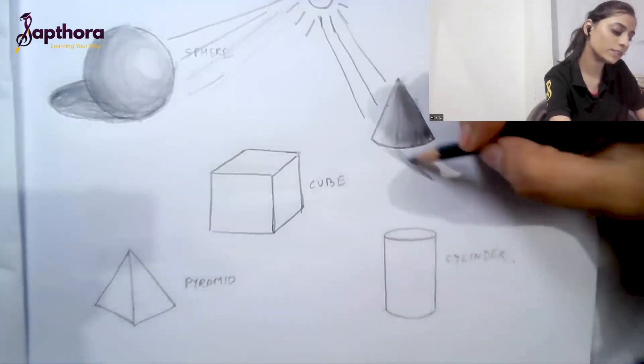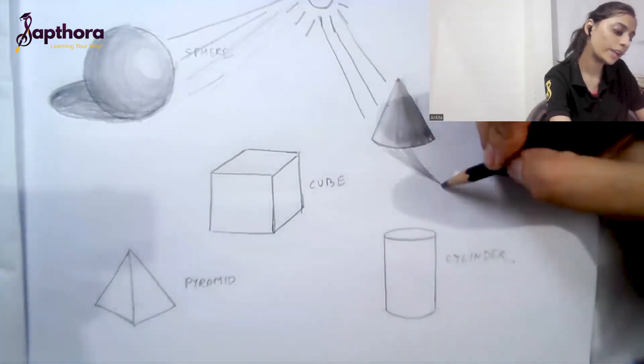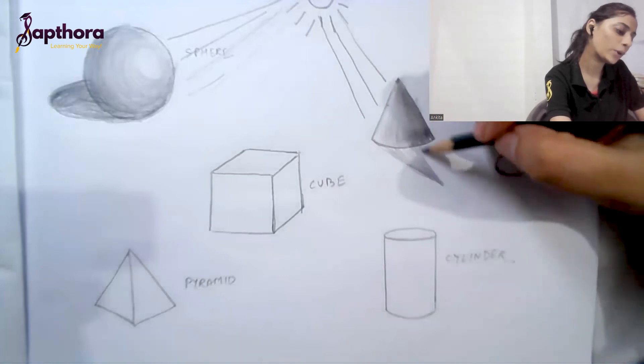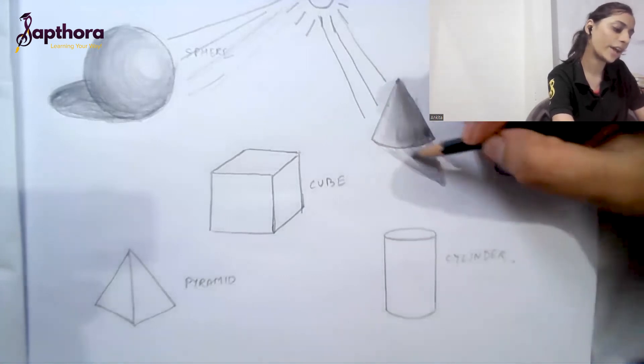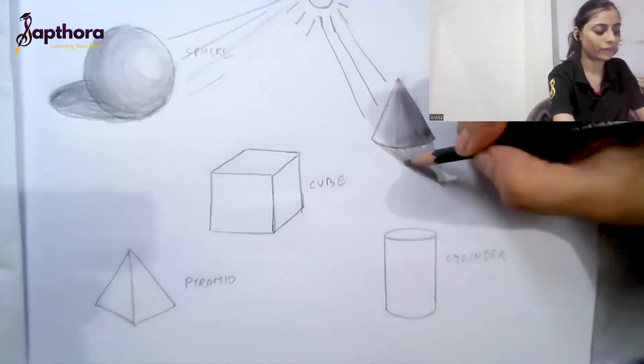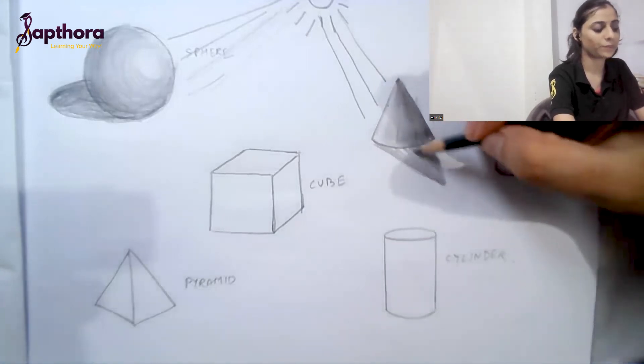The shadow for the cone will form in the opposite direction from the light. When you convert the 3D cone into a 2D shape, this gives you a little triangular shadow.